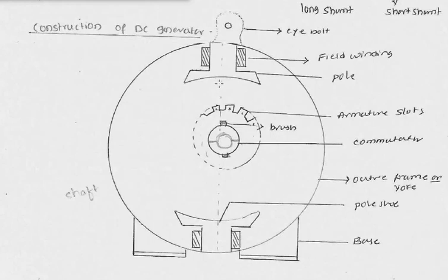The armature is the rotating part. It has slots on the outer periphery. The armature is a cylindrical structure made up of silicon steel material using thin laminations — all those thin laminations are stacked together to form the cylindrical structure. On the outer periphery we have the slots, and inside the slots we place the armature winding. This whole armature is mounted on a shaft.